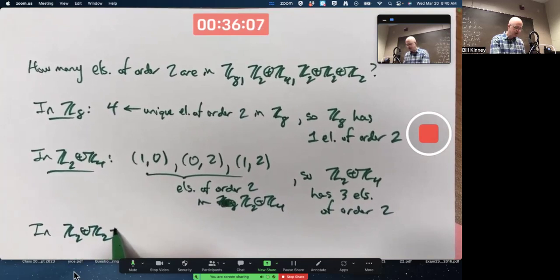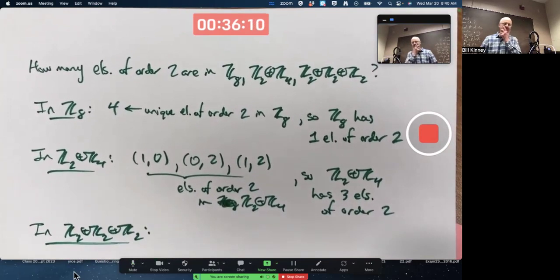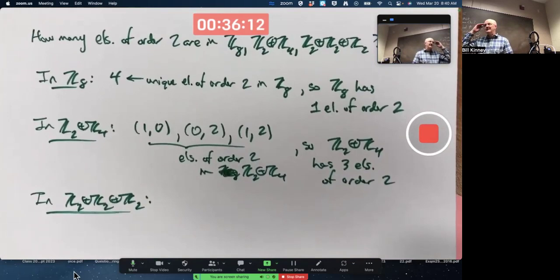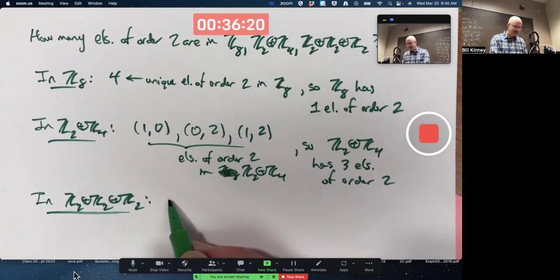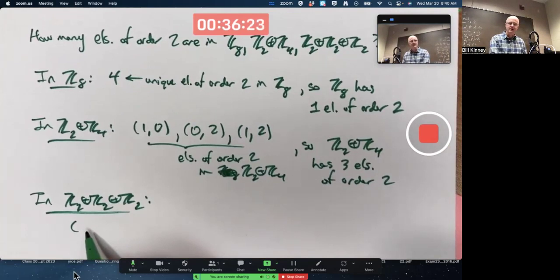I hope you fairly quickly were able to see that every non-identity element has order two, right? The only elements you can write are ones with zeros and ones.